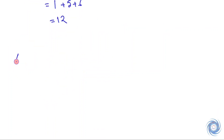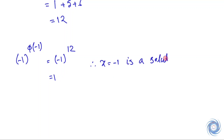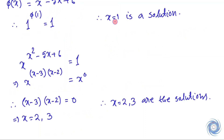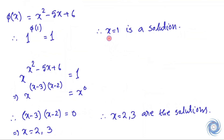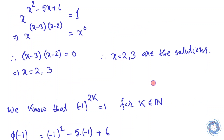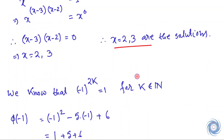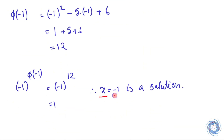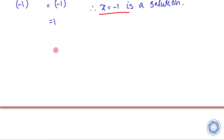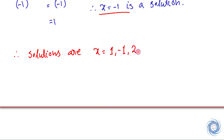From the calculation, the exponent at x equals minus 1 is indeed an even number, and therefore minus 1 is a solution of this equation. So here we have three cases: x equals 1 is a solution, x equals 2 and 3 are solutions, and x equals minus 1 is also a solution. The complete set of solutions gives us 4 solutions.